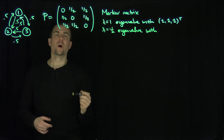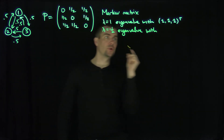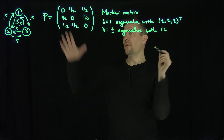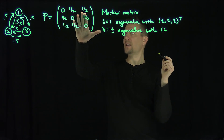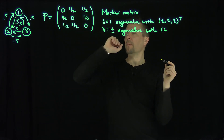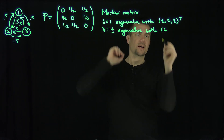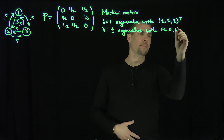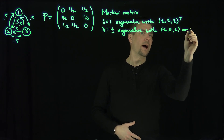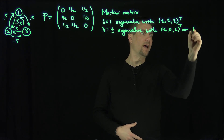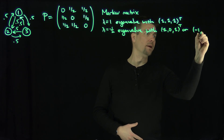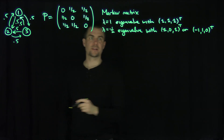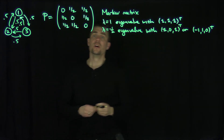With what eigenvectors? I can choose two eigenvectors. I can choose [-1, 0, 1] or [-1, 1, 0]. Those are two independent eigenvectors that correspond to that eigenvalue.